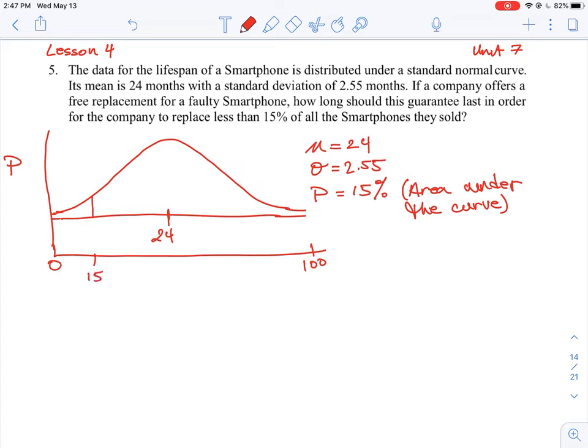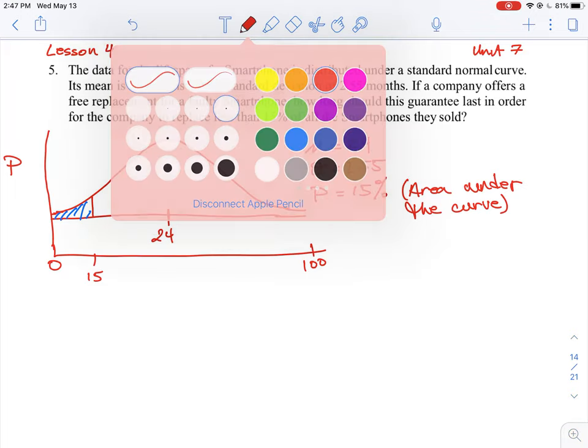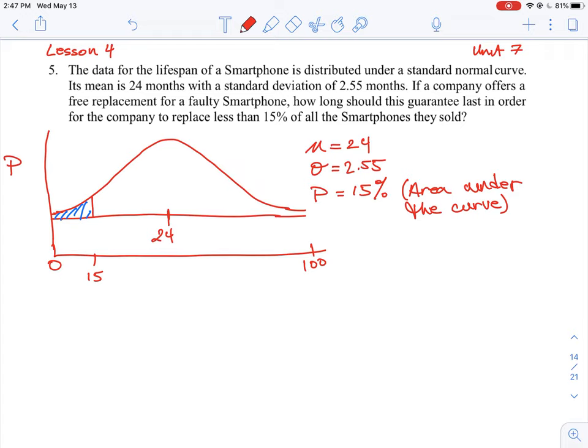So we want to know where we would get 15%, so between 0 and 15, is the area of the curve that we're interested in. So I'm just going to change that to a different color right here. So the part in blue represents 15% of the smartphones that will fail with the mean is 24 months. So the majority of the phones are going to be fine for 24 months, but within that 24 months, there's going to be a certain amount that will fail. So what we want to calculate is how long should they guarantee such that we only are going to be replacing phones in that 15% probability range, where the mean is 24.